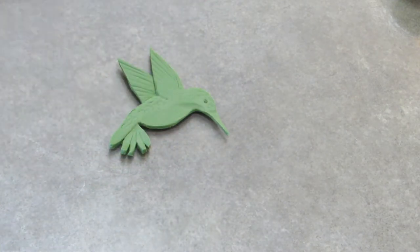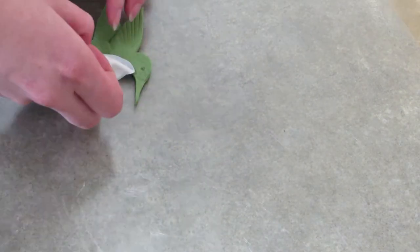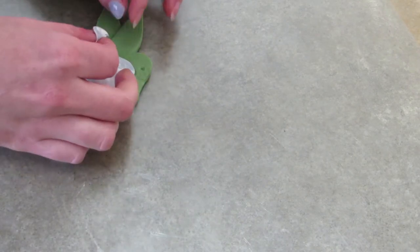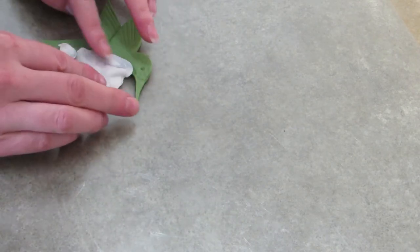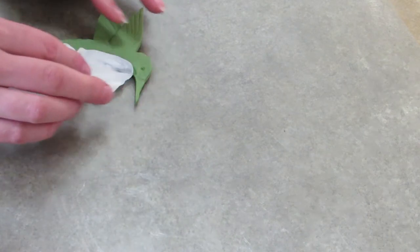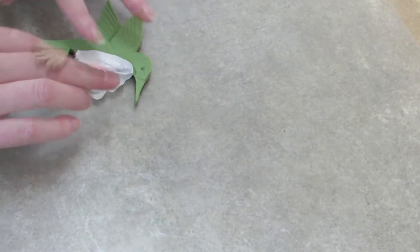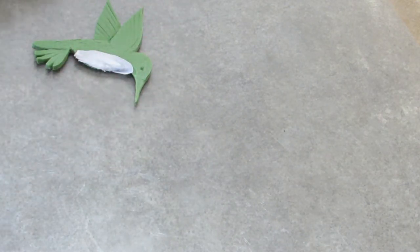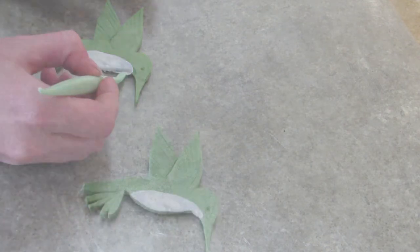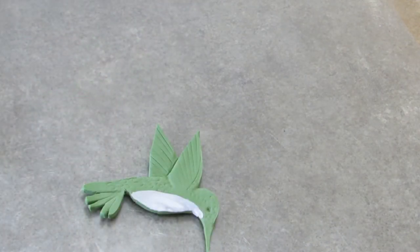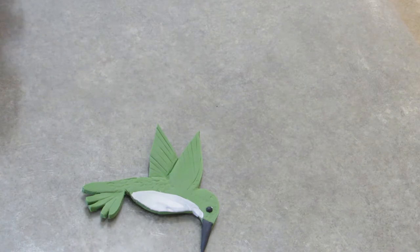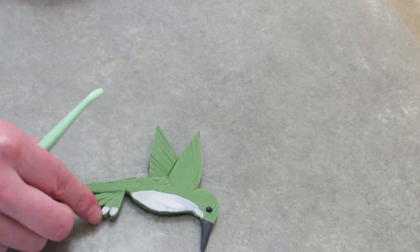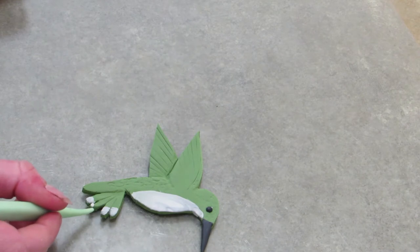Now I'm taking some marbled white and gray that I rolled out super thin, laying it over the belly and the throat that I hollowed out. And pressing it down into place—I had used a little bit of water beforehand that I painted on with a brush just to make everything stick. I do the same thing with the beak in black, add a little black bead for the eye.